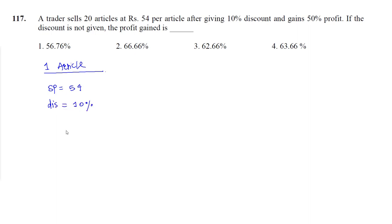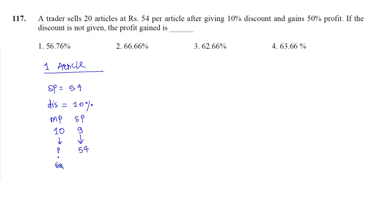From the discount, we can calculate the ratio of marked price to selling price. If marked price is Rs 10 and discount is 10%, that is Rs 1, then selling price becomes Rs 9. In actual terms, selling price is Rs 54. So marked price becomes: 9 represents 54, multiplied by 6, so 10 represents 60. The marked price of the article is Rs 60.